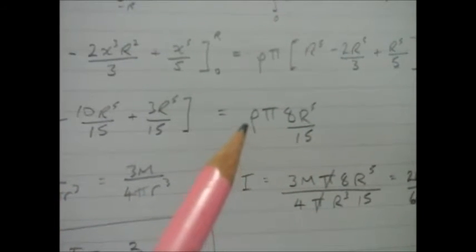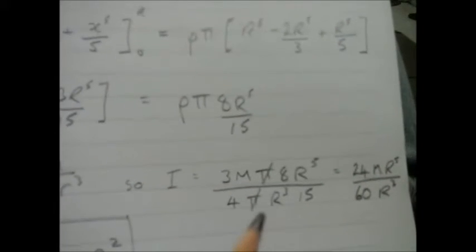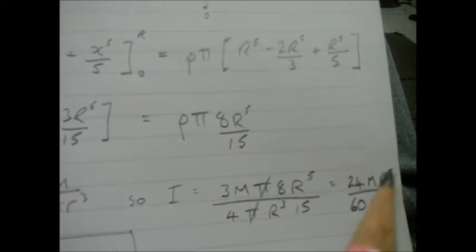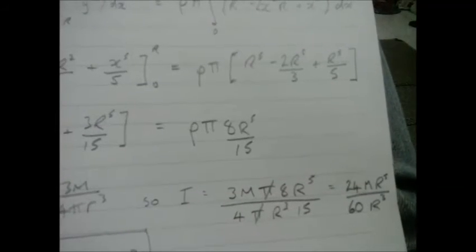I can substitute that back into here, look, for the ρ, and I end up with this. I can see the πs cancel. I can rewrite it again like that. I can see r⁵ divided by r³ - that'll give me r². And the whole thing boils down to that: 2/5 mr².